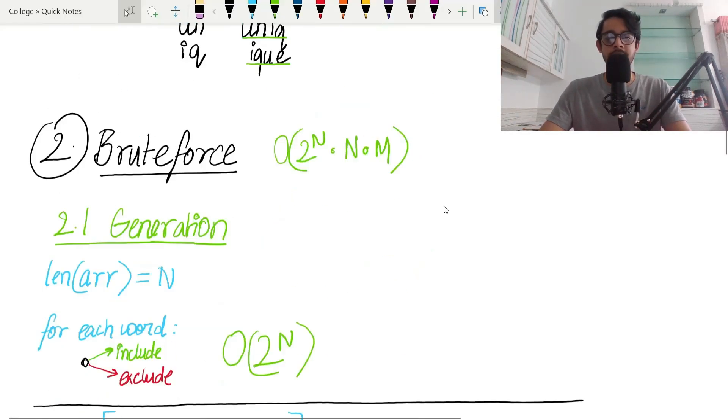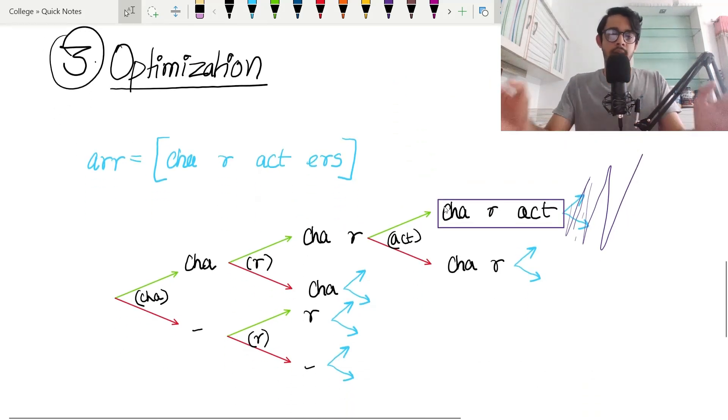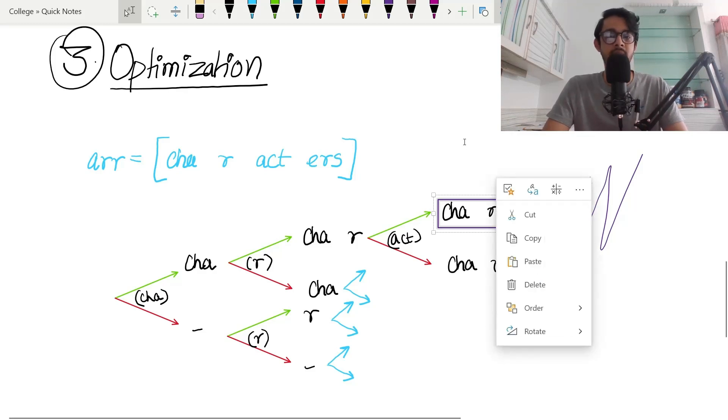Let's look at the optimization. We've taken the same example as before. We're going to do one simple observation. Look at this purple box and see what you find. There's a repetition of characters - character c repeated twice and character a repeated twice, meaning any strings that come out after this string will also be invalid.